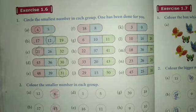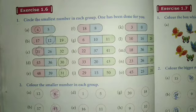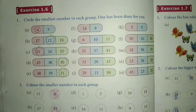Next, 21, 26, 32. अब इन तीनों में से सबसे small number कौन सा है? 21. इसलिए हमने 21 पर circle किया.